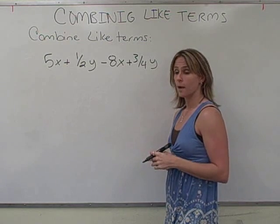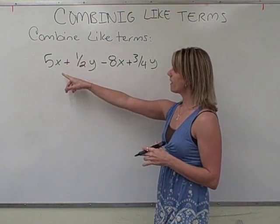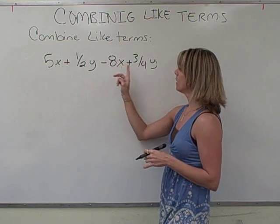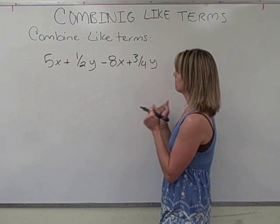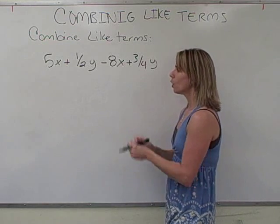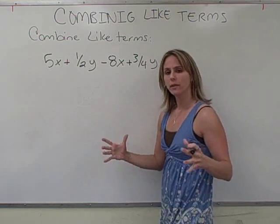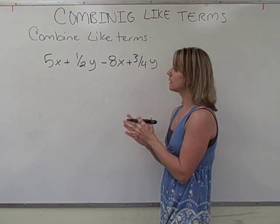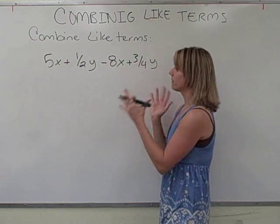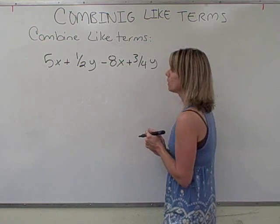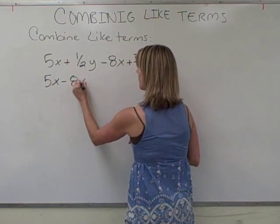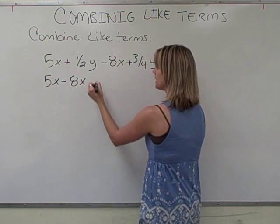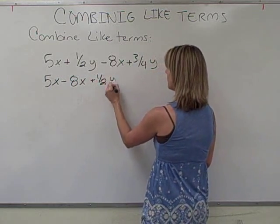Our next example will be this. 5X plus 1 half Y minus 8X plus 3 fourths Y. And we ask, do we have like terms? We see things that are like, not everything is, but that's okay. We just need to combine whatever we can and leave everything else separate. So what we'll do first is move both terms that have the X next to each other, keeping the sign in front the same.